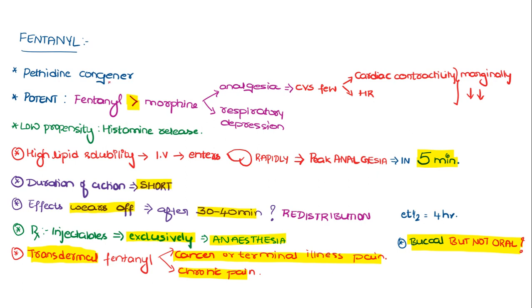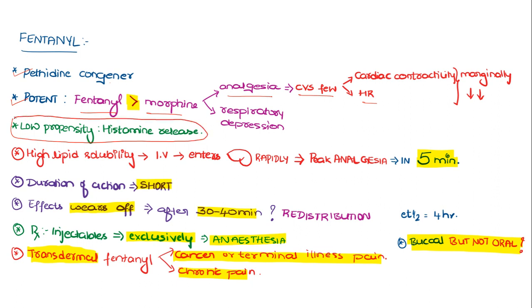Fentanyl is a pethidine congener with potent action. It is more potent than morphine in producing analgesic action. There are a few cardiovascular side effects — it reduces cardiac contractility as well as heart rate marginally. It produces respiratory depression similar to morphine, and very importantly, it has low propensity to cause histamine release compared to morphine.